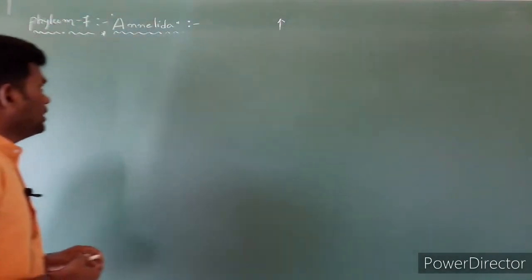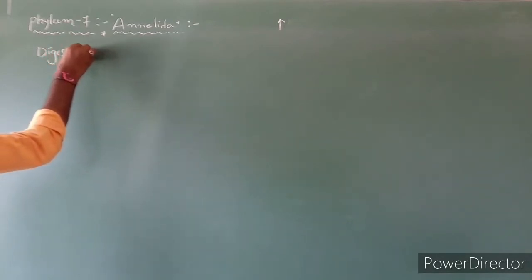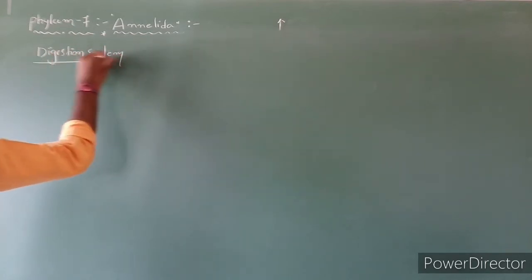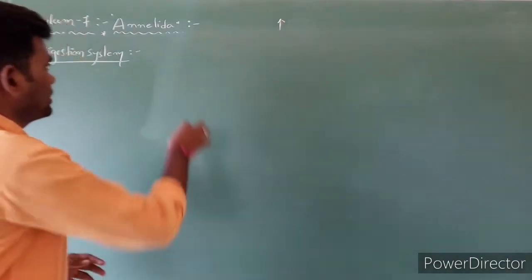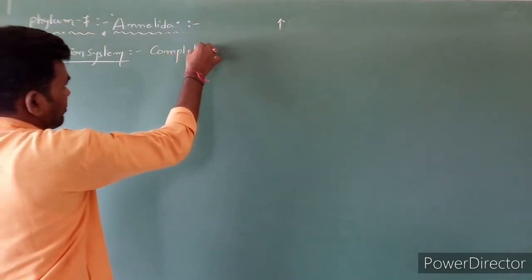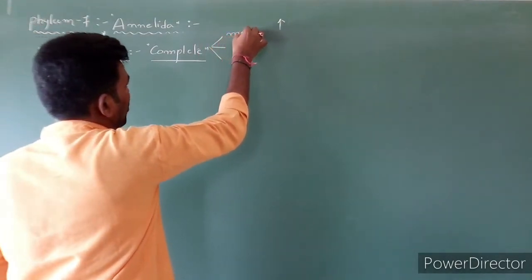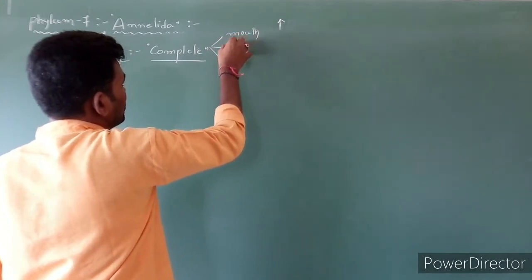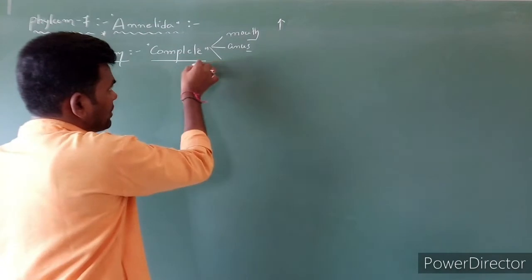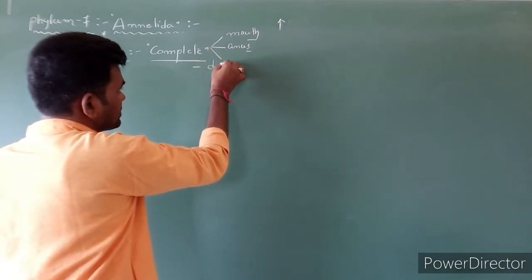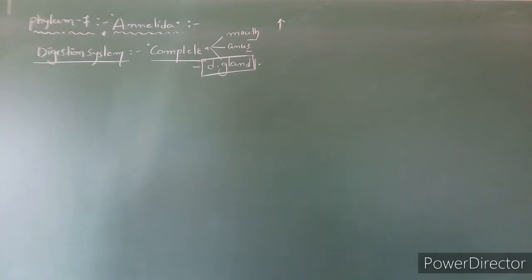The digestive system is complete in Annelida, consisting of mouth, anus, and digestive glands. Digestive glands are first noticed in Annelida — this is a key character not seen in the previous six phyla.